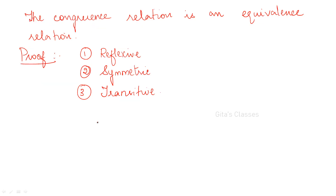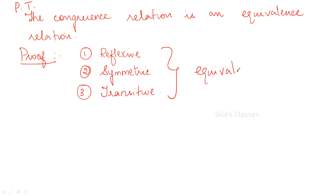Now another important theorem — this was asked in a university exam. Congruence relation is an equivalence relation. You will be asked to prove that the congruence relation is an equivalence relation. Equivalence relation means it should satisfy all three conditions: it should be reflexive, symmetric, and transitive. Let us prove this one by one.